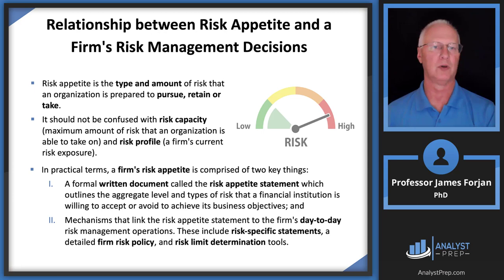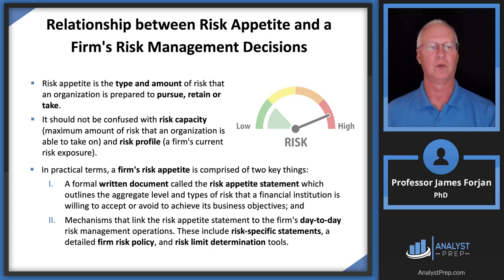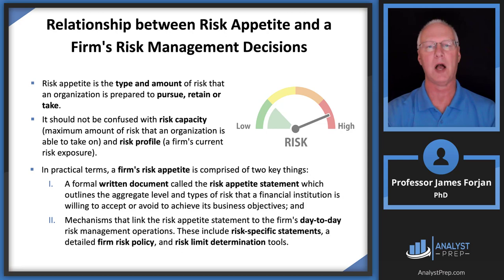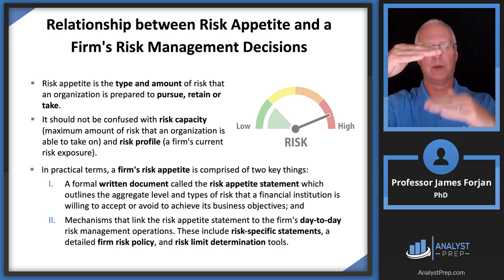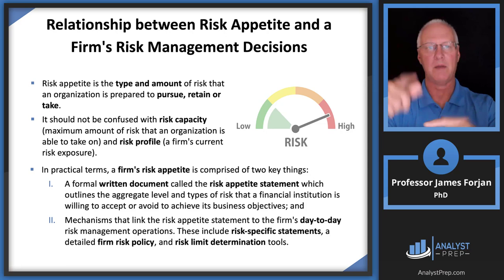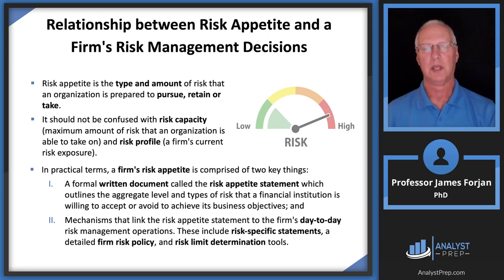Let's swing back to the beginning of the chapter and talk about the relationship between risk appetite and risk management decisions. The risk profile is a firm or bank's current risk exposure. Risk capacity is a ceiling — some maximum amount the organization is able to take on. Between the risk profile and the risk capacity ceiling lies the middle ground, which has everything to do with risk appetite: the type and amount of risk that the institution is prepared to pursue, retain, or take.